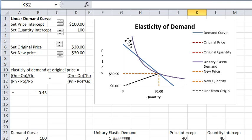I'm going to leave what this purple unitary elastic curve is for a moment, and we'll get back to it in a little while. You have two other controls here: one for the original price, now set at 30, and one for the new price, also set at 30.